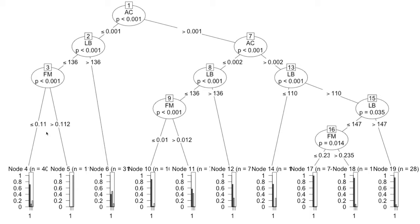Now if you are at node 3 and fm is less than or equal to 0.11, you reach the terminal node. This is the decision node where you can look at the probabilities. The probability that the response variable equals 1, meaning the patient is normal, is between 60% and 80%, so about 70% chance. Similarly, you can interpret any other branch: if ac is less than or equal to 0.001 and lb is less than or equal to 136 and fm is greater than 0.112, then you see that response level 3 has the highest probability — almost close to 1 — meaning that patient is likely to be pathologic.